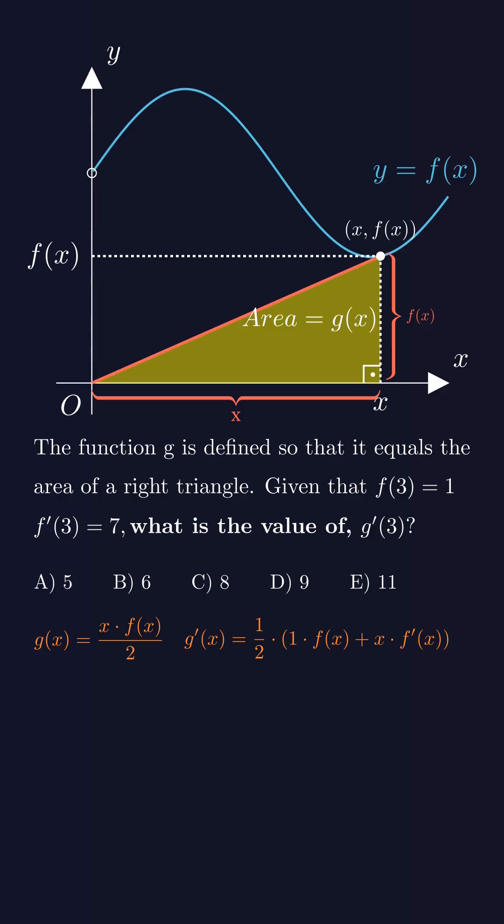Now plug in x equals 3 into this expression, we already have all the values we need. g'(3), 1 half, times 1 plus 3 times 7, which of course gives us 11.